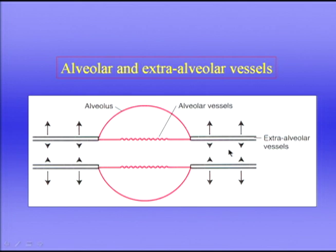Extra-alveolar vessels contain some smooth muscle and elastic tissue, giving them a tendency to become smaller. But they are actively pulled open by the radial traction of the lung parenchyma around them. You can think of the calibre of the extra-alveolar vessels as a balance between expansion of the lung trying to pull them open and their intrinsic tendency to get smaller. As you might expect, extra-alveolar vessels become larger — their calibre increases — when we increase lung volume.